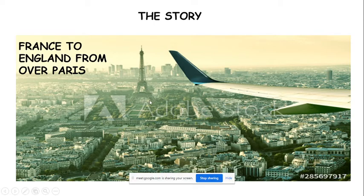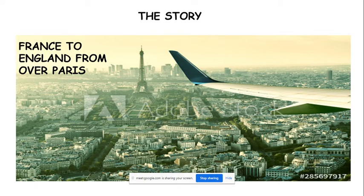He is flying over Paris. Paris is a very planned city — even from the top of the Eiffel Tower you can see the whole city looking very organized from up there. The plane was flying above Paris, making its way toward England.